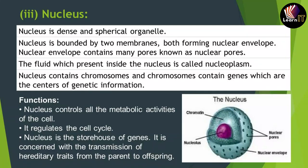The next important topic is the nucleus. In the structure diagram, the outer layer is the nuclear envelope, which is blue in color and contains chromatin material. Inside it is a purple circular structure known as the nucleolus. The nucleus is a dense, spherical organelle bounded by two membranes — the nuclear envelope — which contains pores called nuclear pores. The fluid inside the nucleus is called nucleoplasm. The nucleus contains chromosomes, and chromosomes contain genes, which are the center of genetic information.